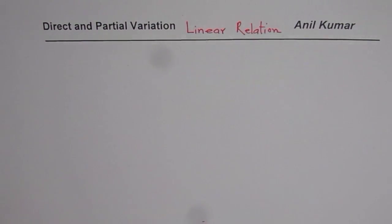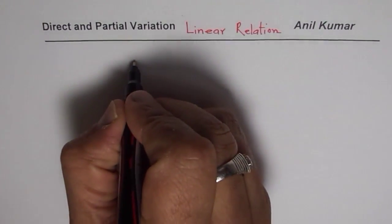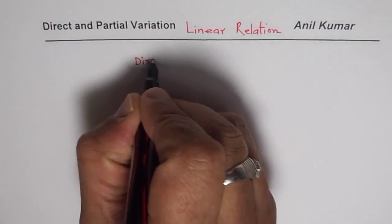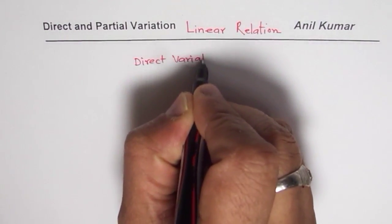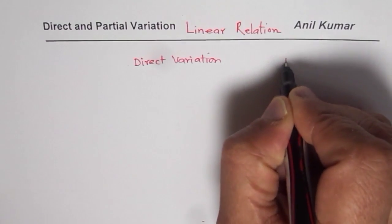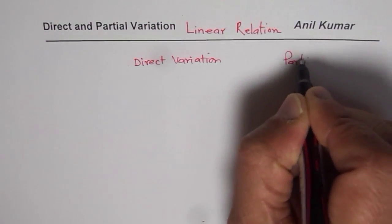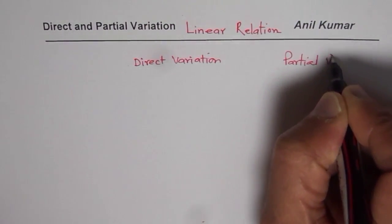Now we will see how and when a linear equation becomes a direct variation and when is a partial variation. So let's make two columns for these. We will consider direct and partial variation. Direct variation and partial variation. We will compare them.